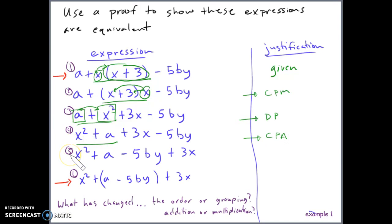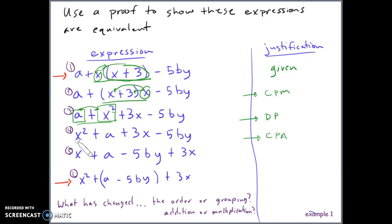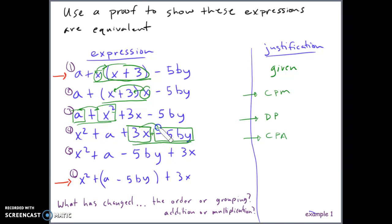From expression 4 to 5, we go from x² plus a plus 3x minus 5b to x² plus a minus 5b plus 3x. Again, the order has changed — they took the negative 5b (treated as plus a negative) and the positive 3x and swapped their order. Now negative 5b comes first and 3x is added afterwards. This is again the commutative property of addition.